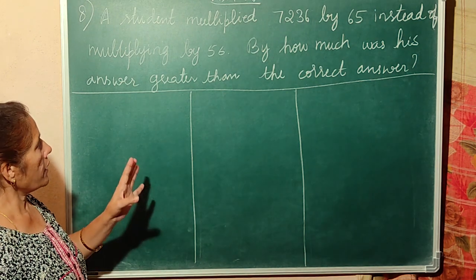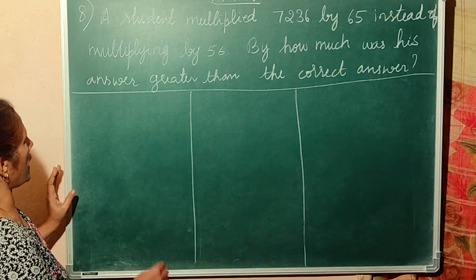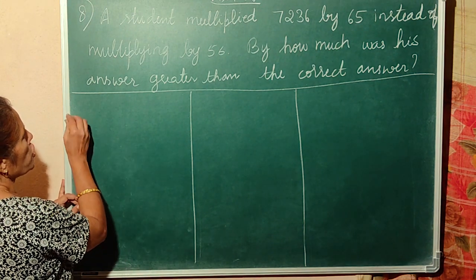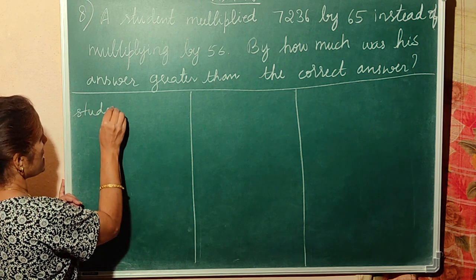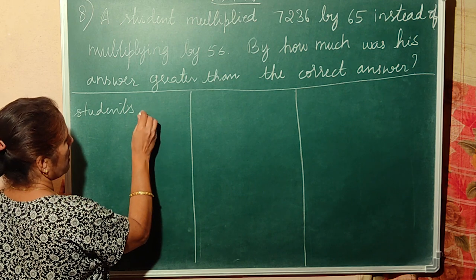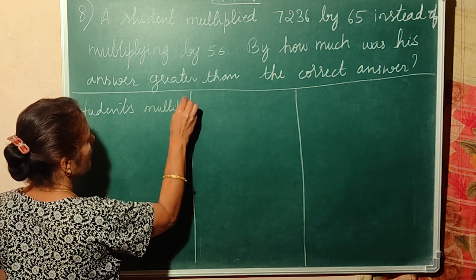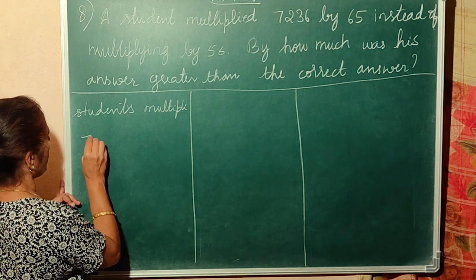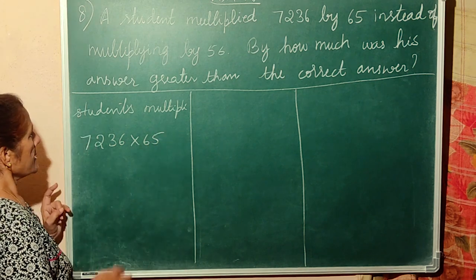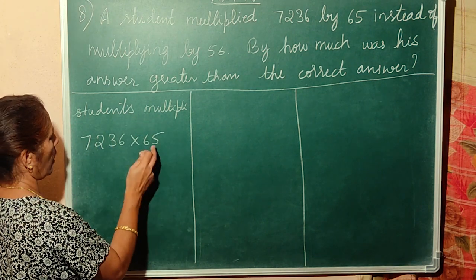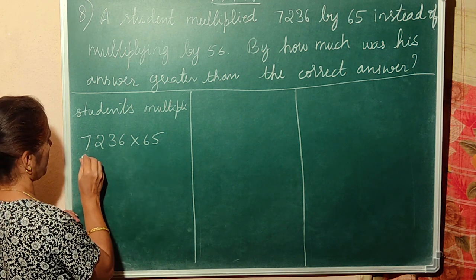Now we will do this by drawing the line slides. We need to find out what is the difference between 7236 into 65 and 7236 into 56. This is the student's multiplication — 7236 into 65.